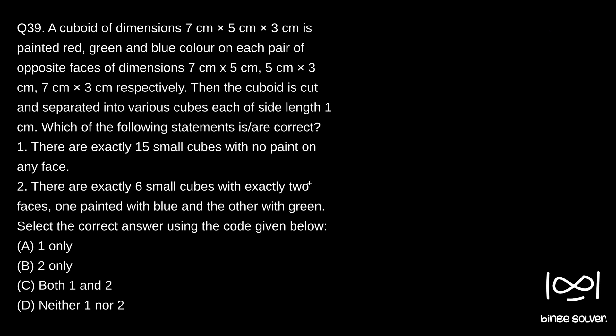Which of the following statements are correct? First statement: there are exactly 15 small cubes with no paint on any face. Second statement: there are exactly six small cubes with exactly two faces, one painted with blue and the other with green. Select the correct answer: one only, two only, both one and two, or neither one nor two.